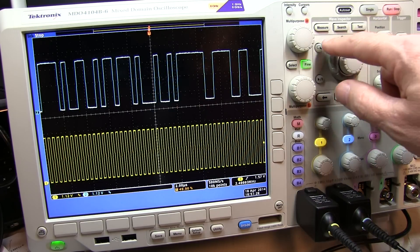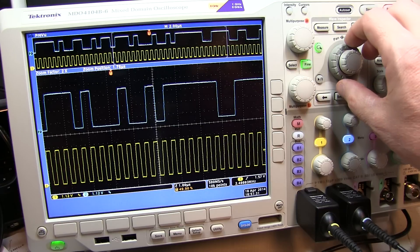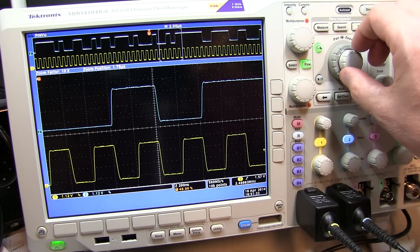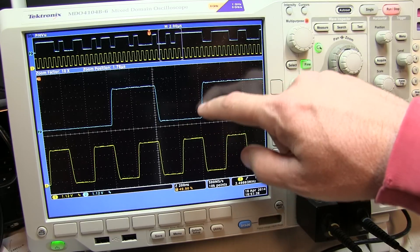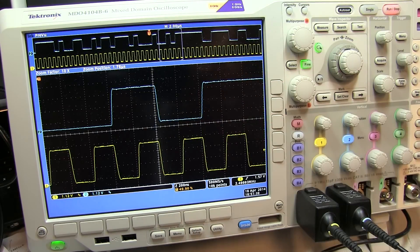And if we zoom in on this, we can actually see that the bit pattern is lined up such that the data always transitions on the falling edge of a clock.